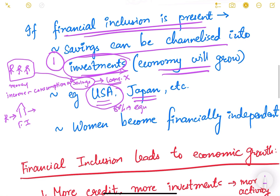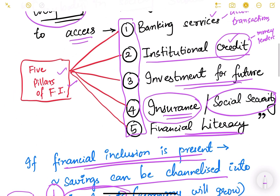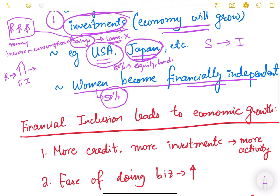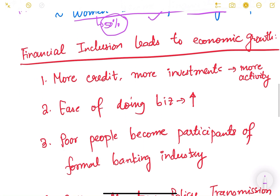Japan similarly has a lot of channelization of savings into investments. Women also become financially independent — women constitute almost 50 percent of our population, and if 50 percent of the population are not included in the formal banking system, we cannot say we are financially inclusive. Financial inclusion means women should also become members of the financial system, able to access all five pillars. In this way they become financially independent — knowing how much to save, when to withdraw, how to invest, and they can also have social security for old age.